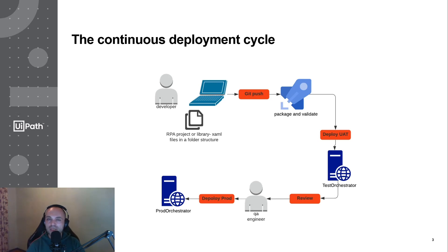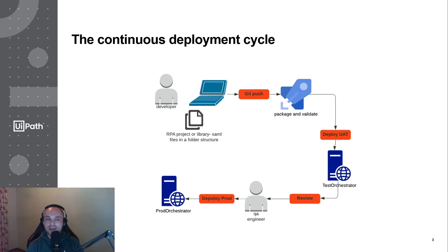For this we need a build agent — which we'll talk about next time in the next webinar — which will be a dockerized version of the UiPath robot. Once that build artifact exists, it gets deployed to testing, it is reviewed, a QA engineer will test it, and it then gets deployed to production.